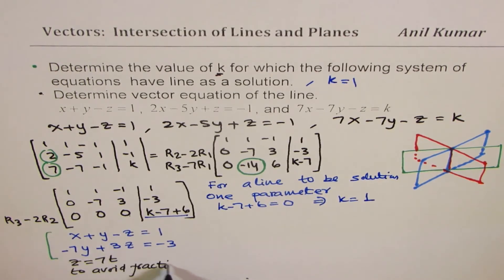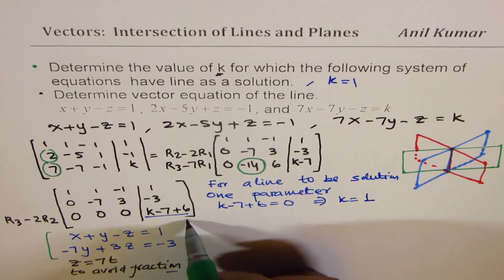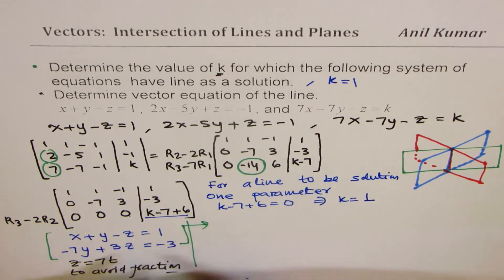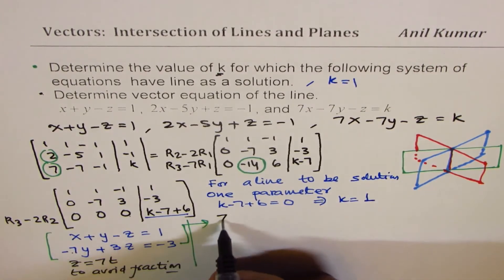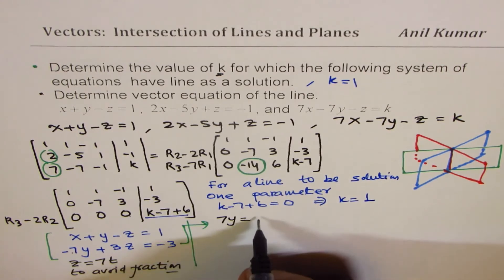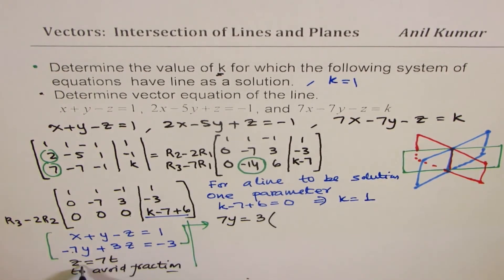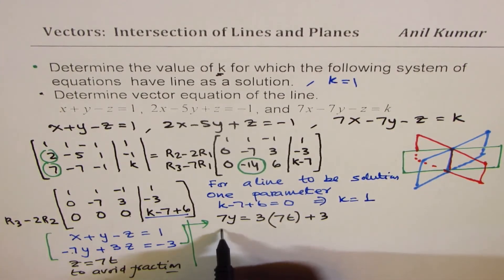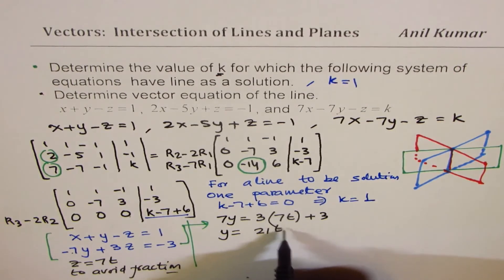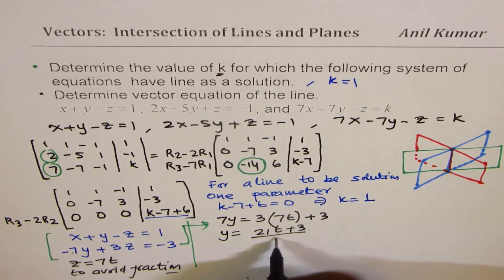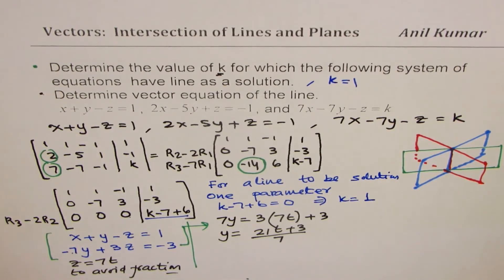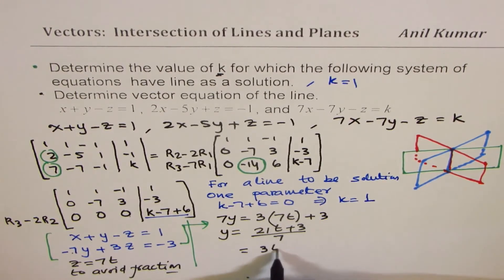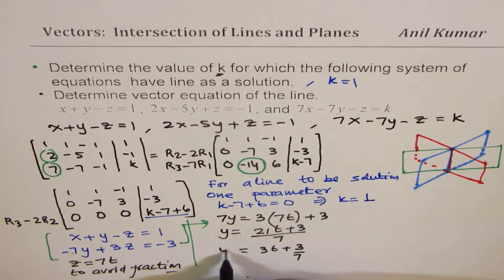In that case, what happens to this equation? I get 7y. Let me take it to the other side. 7y equals to 3 times, I'm putting z is 7t plus 3. Do you see that? So, y is equals to 21t plus 3 divided by 7, which is 3t plus 3 over 7. So, that is the value of y.